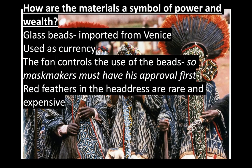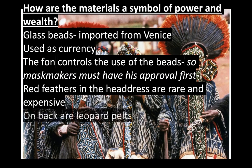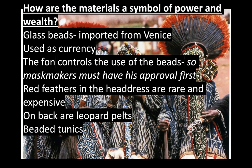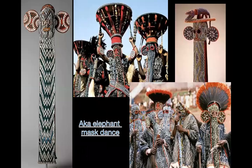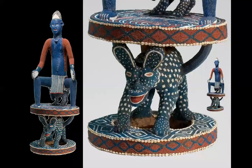The red feathers in the headdress are a rare, expensive material — therefore that equals power. As you saw in the video, they have a giant leopard skin on their back, a beaded tunic, and bells and rattles. Here are some more contextual pictures to see them being used.